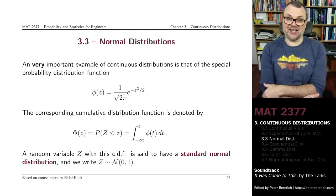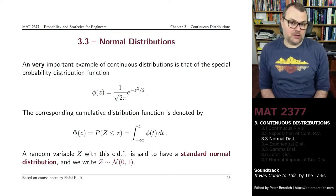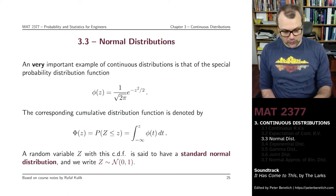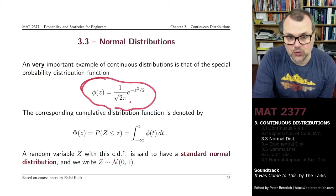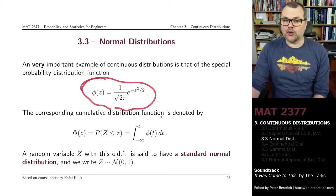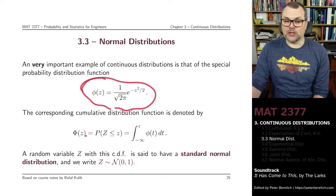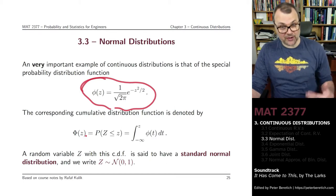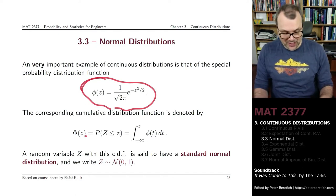I'll explain what these things mean later when we talk about general normal distributions. One annoyance about the normal distribution is that the PDF is fairly straightforward — it's an exponential of a polynomial. Unfortunately, there is no analytical expression to describe the CDF that only uses simple functions. The integral exists because the area under the curve exists, but there's no nice function that describes what that area would be.